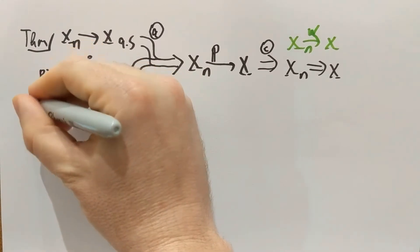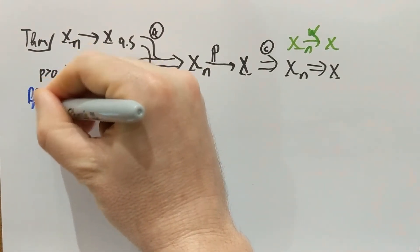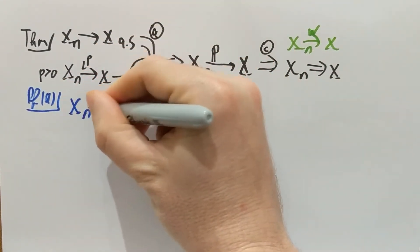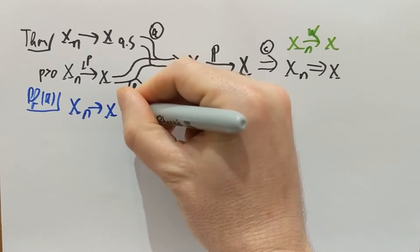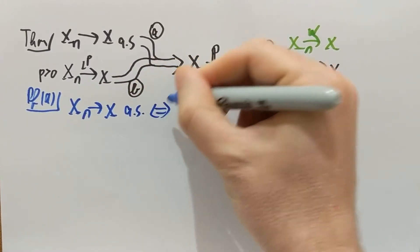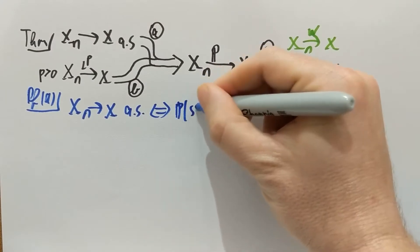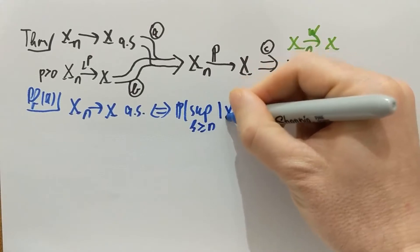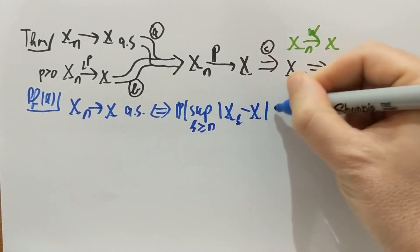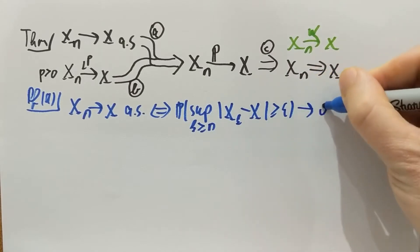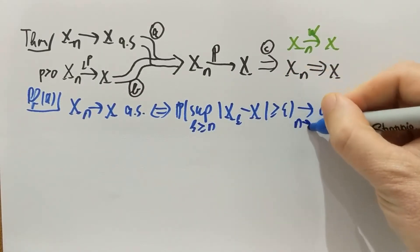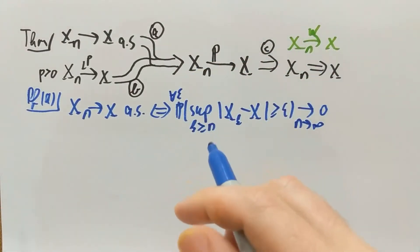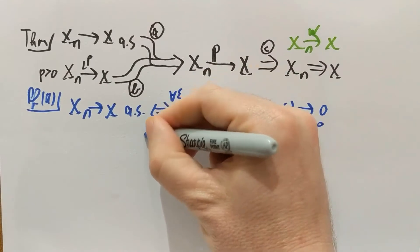The proof of A is simple once we have the previous statement in hand. Xn converges to x almost surely was seen to be equivalent to the probability that the supremum over k at least n of |Xk minus x| larger than epsilon goes to zero for every epsilon as n goes to infinity. This was a theorem we just proved in the previous video.